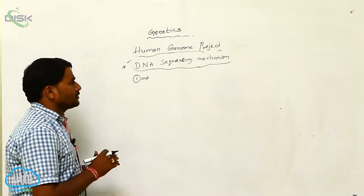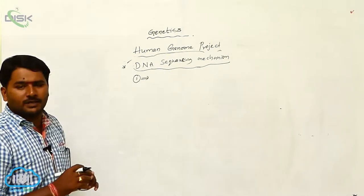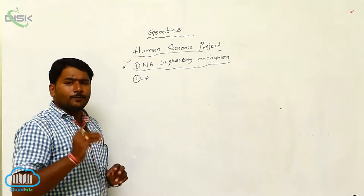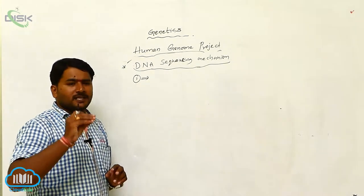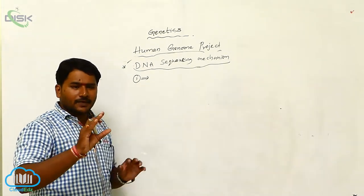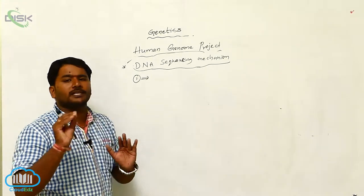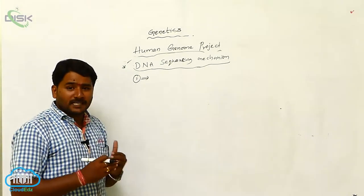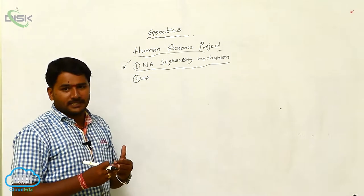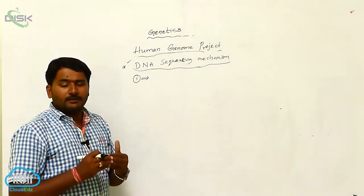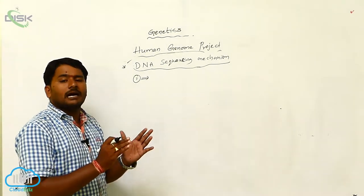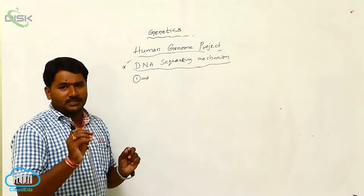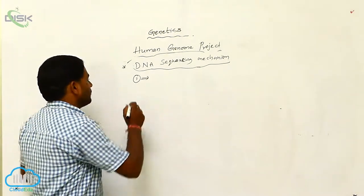The first type of mechanism during DNA sequencing is: whatever genes which express their characters, identification of their nucleotide sequences — that means expressed tandem repeats. The part or the genes which express their characters are sequenced. That is the first type.